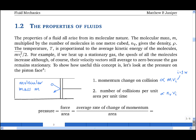So the pressure on the piston is the force on the piston divided by its area, and that is the average rate of change of momentum of the molecules hitting the piston divided by the area.